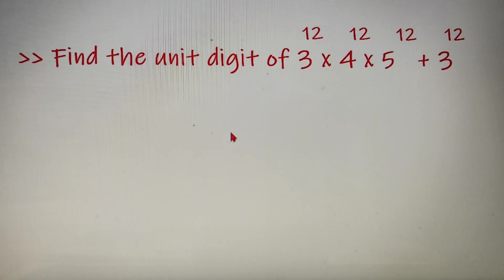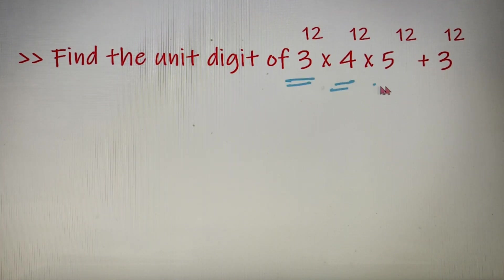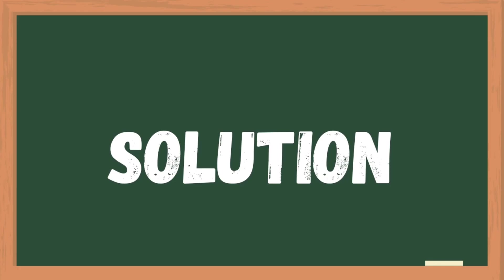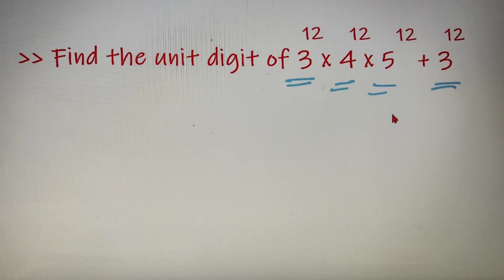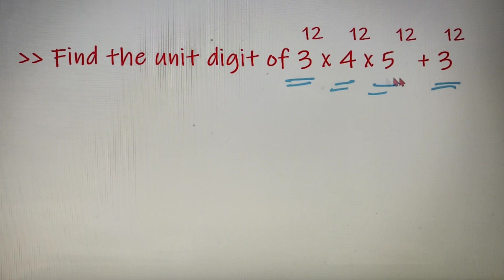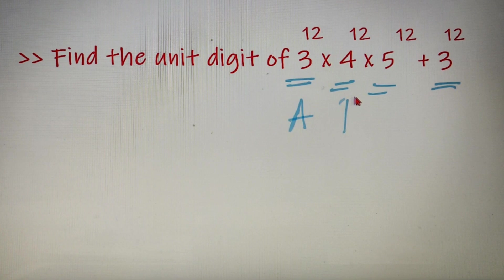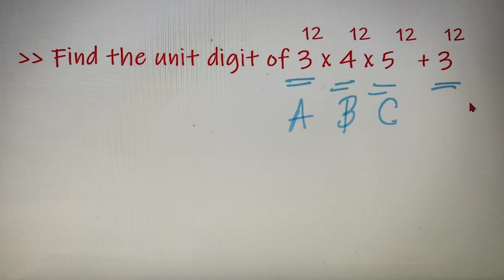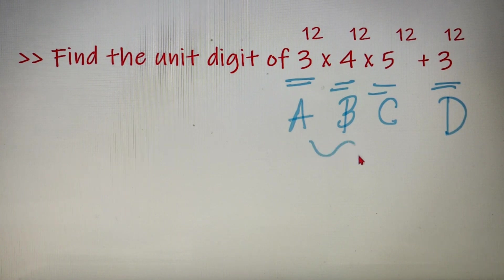Moving on to our third and final question, we have to find out the unit digit of 3 to the power 12 into 4 to the power 12 into 5 to the power 12, plus 3 to the power 12. This question is one level higher than the previous one. We take 3 to the power 12 as our first number, 4 to the power 12 as the second, 5 to the power 12 as the third, and 3 to the power 12 as the fourth number. We find the unit digit of the product of the first three numbers and add it to the unit digit of the fourth.